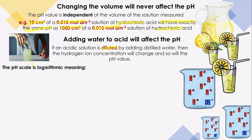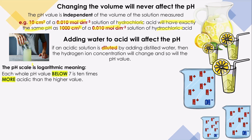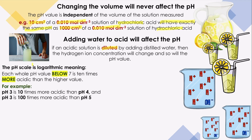As we said before, the pH scale is logarithmic, which means that each whole pH value below seven is ten times more acidic than the next pH value. For example, pH 3 has a lower value than pH 4, which means it is ten times more acidic than pH 4. So pH 3 is more acidic than pH 4 by a factor of ten, and pH 3 is a hundred times more acidic than pH 5.